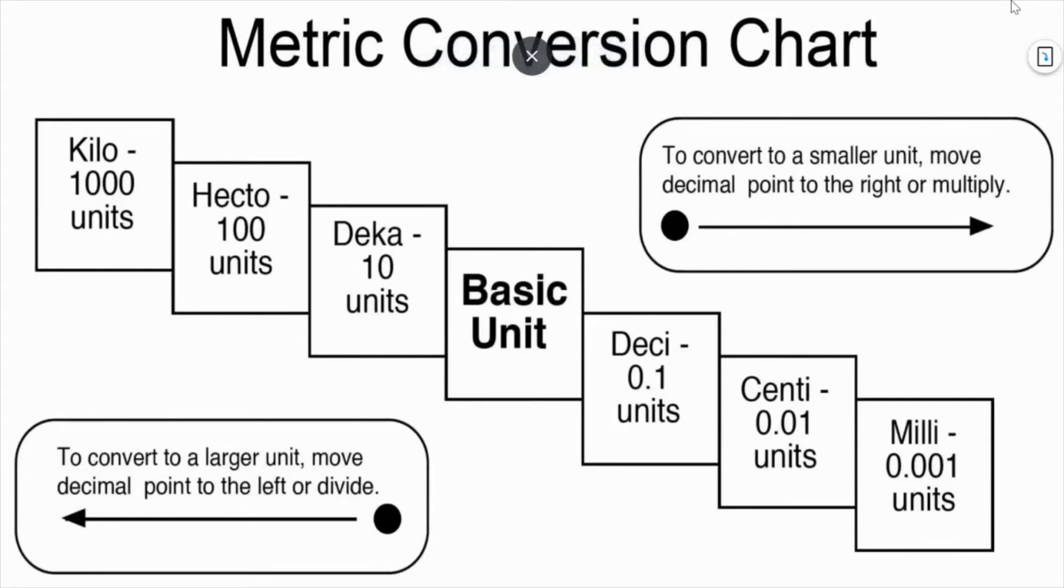Here we have the metric conversion chart. You're going to see that we start with kilo, then go down to hecto, deca, the basic unit, deci, centi, and milli. What you notice is that the numbers go down: you start at a thousand and it goes down to 100 units, 10 units, basically one unit, 0.1, 0.01, 0.001.